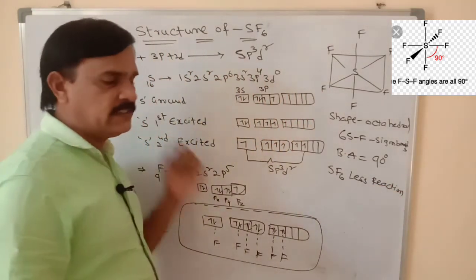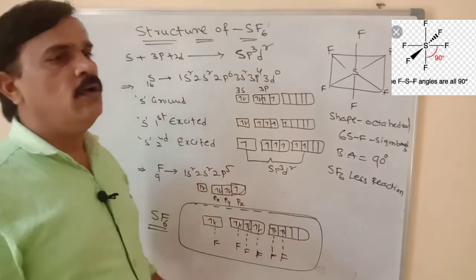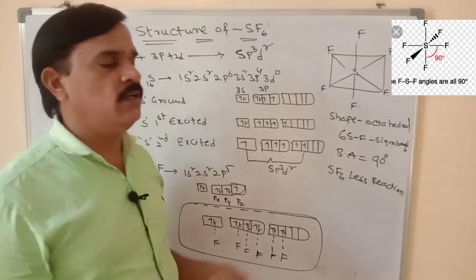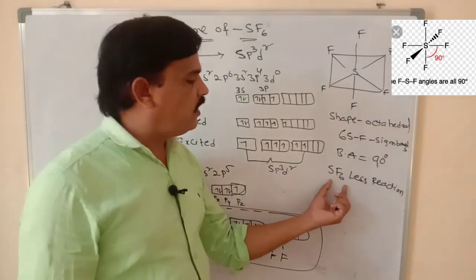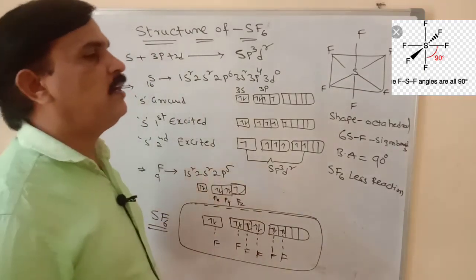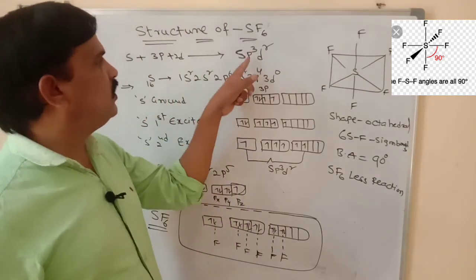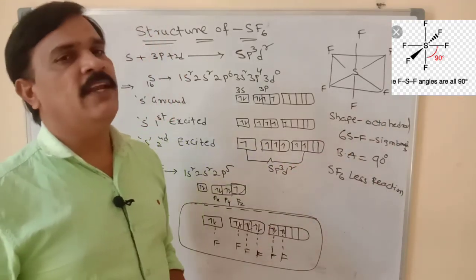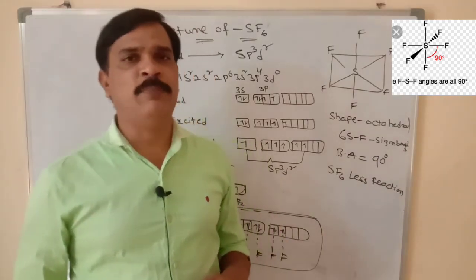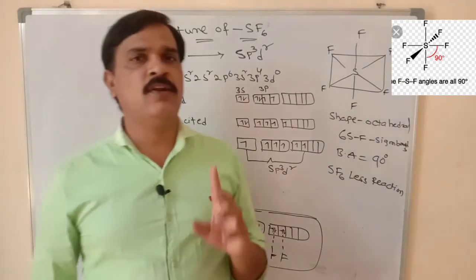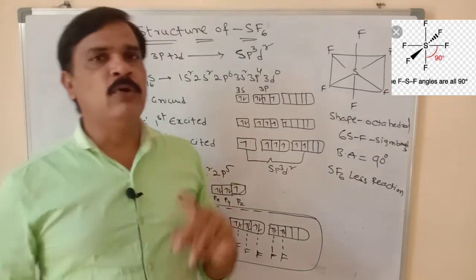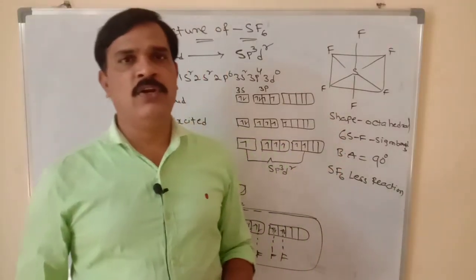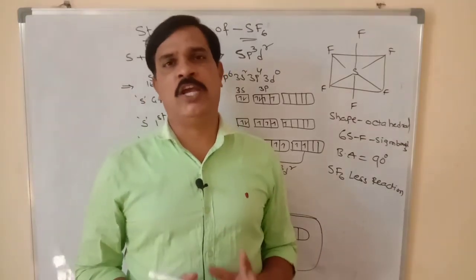SF6 is less reactive compared to PCl5 because all fluorines are in equatorial positions with a bond angle of 90 degrees, making sulfur less reactive than phosphorus pentachloride. SF6 undergoes sp3d2 hybridization with zero lone pairs, giving an octahedral shape with a bond angle of 90 degrees. Please like, share, comment, and subscribe to my channel. Thank you.